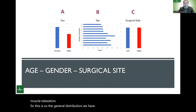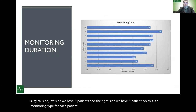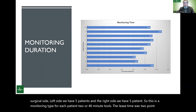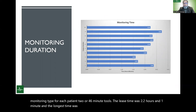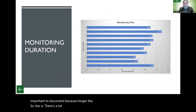We covered the sciatic nerve and femoral nerve for stretch injuries using lower extremity MEPs, hand MEPs for control, and EMG from all lower extremity muscles. Train-of-four was performed from the foot muscle to monitor the level of muscle relaxation. Monitoring duration ranged from a minimum of 2 hours 1 minute to a maximum of 3 hours 6 minutes. Documenting surgical duration is important because longer surgery means a longer period of traction on the nerve, which may cause more damage.